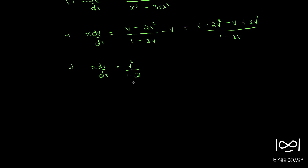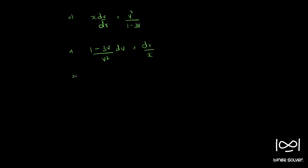This can be solved using the method of separation of variables, taking all v terms to one side. So we have (1 by v squared minus 3 by v) dv equal to dx by x.